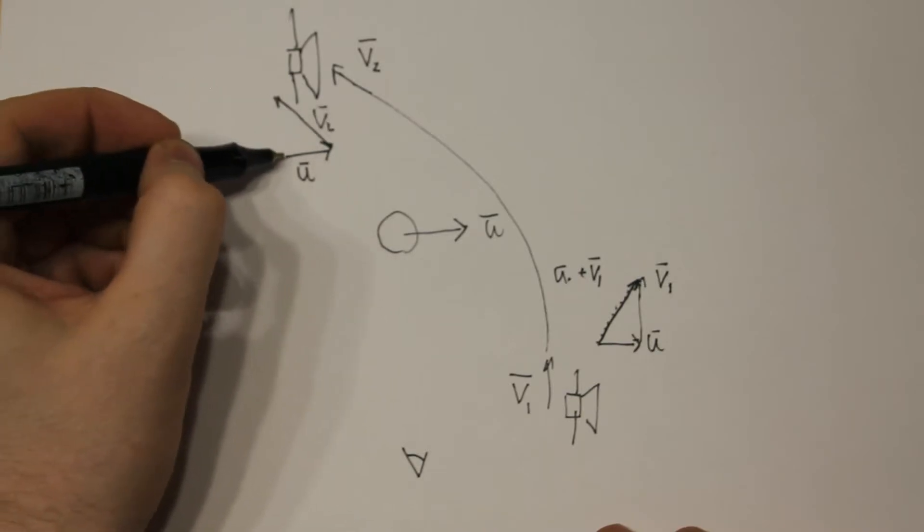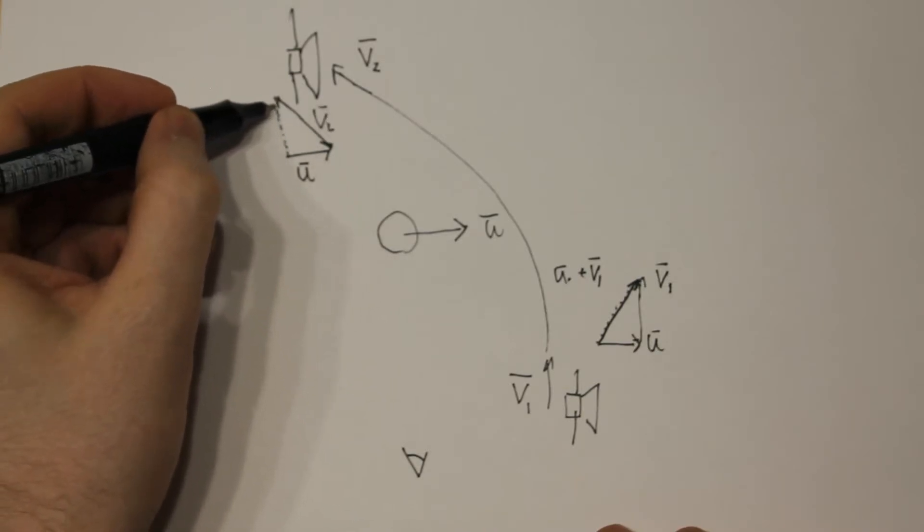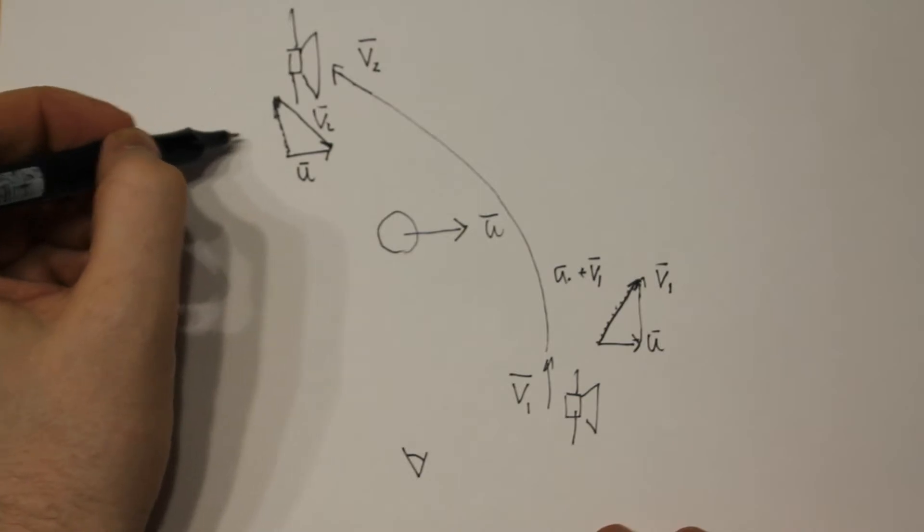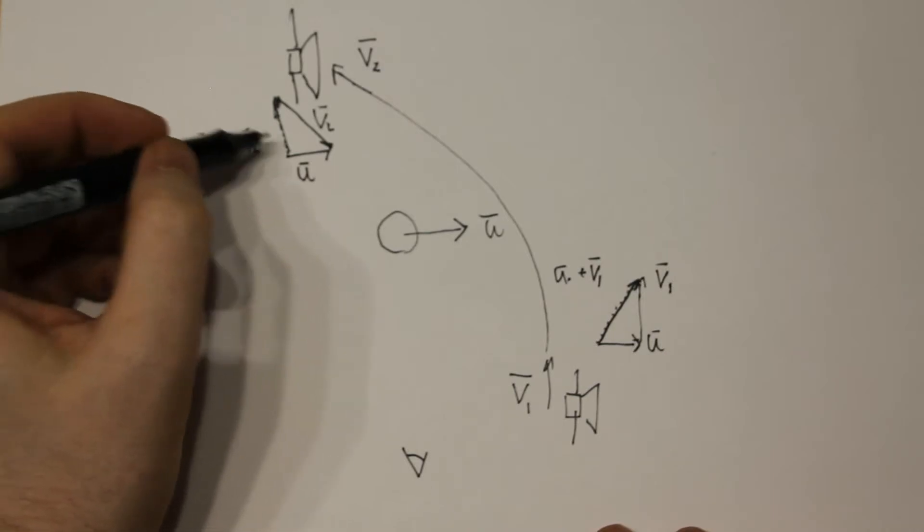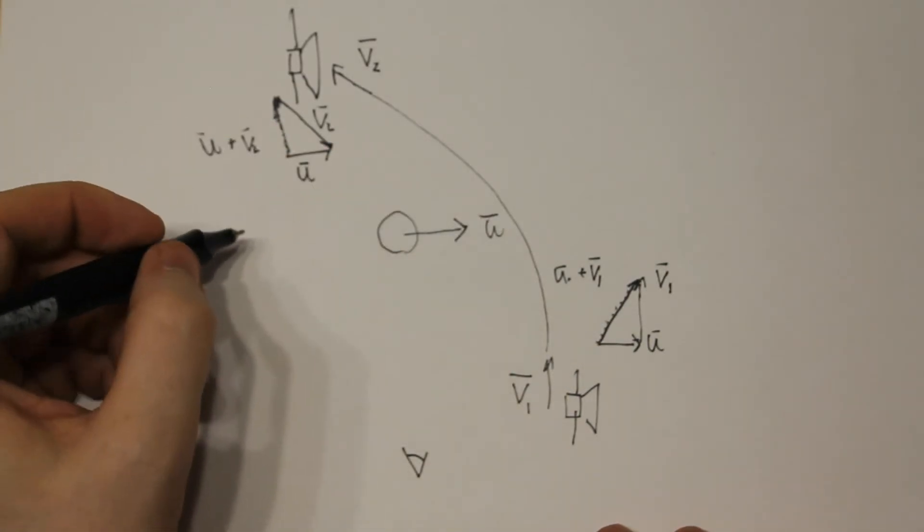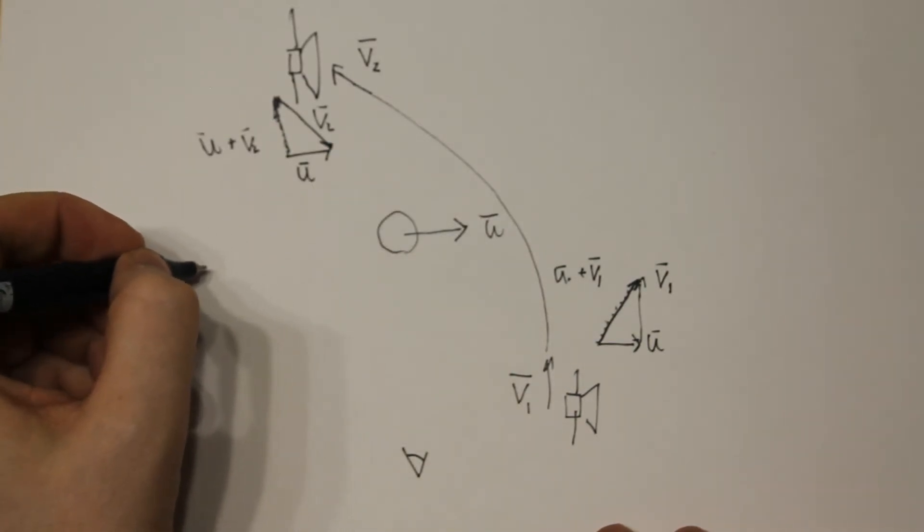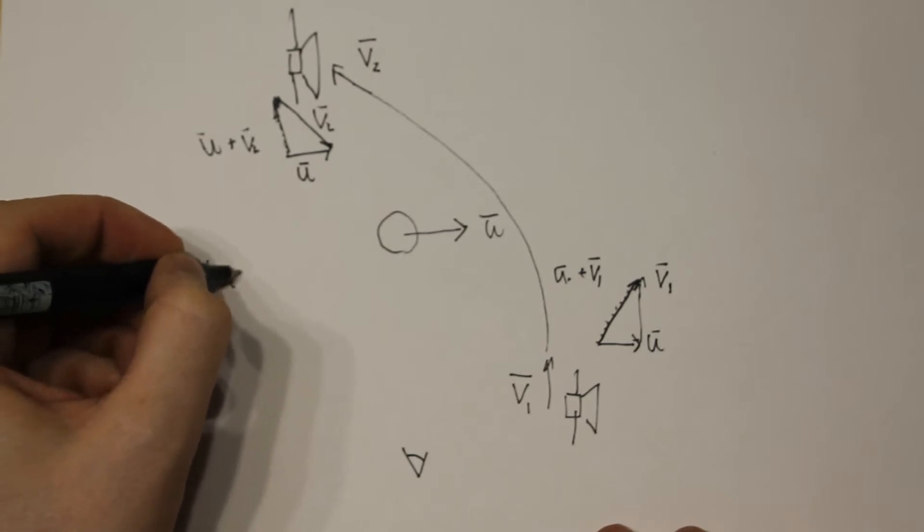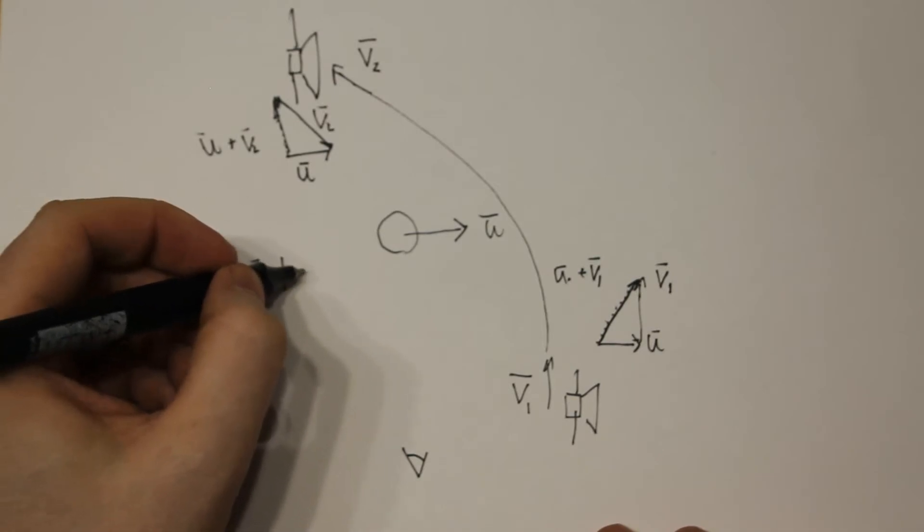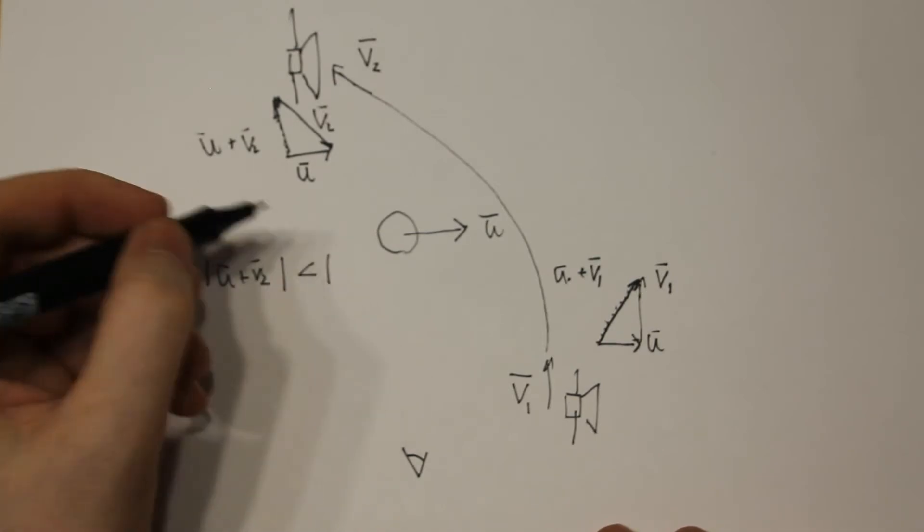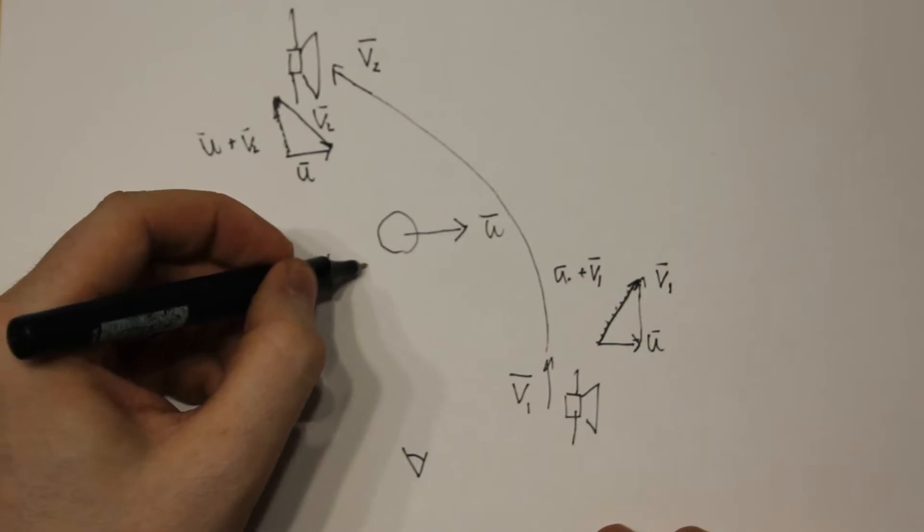And we can see that the sum of those two vectors, so u plus v2, this vector is shorter, or as it should be shorter than this one. So in general terms, the length of the u plus the v2 vector should be shorter than the length of the u plus the v1, and those are also both vectors.